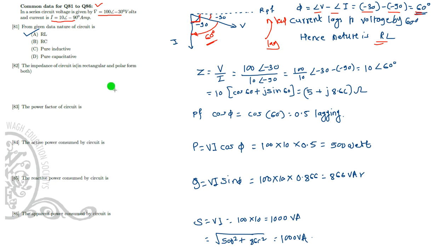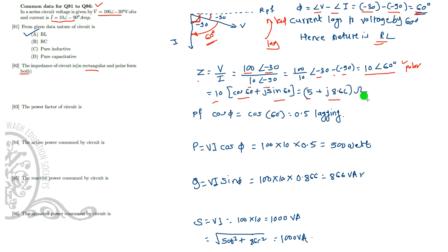Now we determine the impedance in both rectangular and polar form. Z = V/I = 100∠−30° / 10∠−90° = 10∠60°. Converting to rectangular form: 10cos(60°) + j·10sin(60°) = 5 + j8.66 ohm. The power factor is cos(60°) = 0.5 lagging.